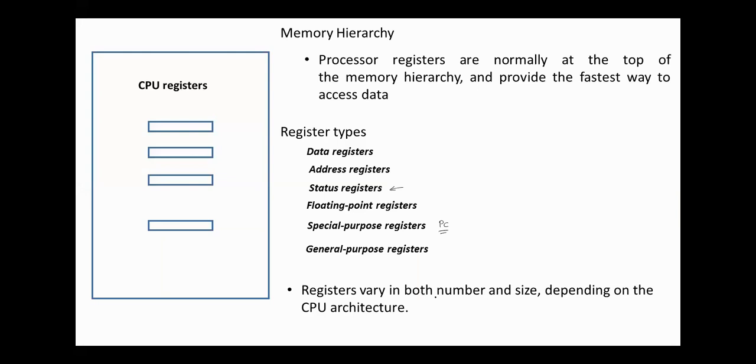CPU registers vary in both number and size depending on the CPU architecture. For many years 32-bit registers were used but now 64-bit registers are used. Regarding the number of registers, they vary from 16 registers to several hundred registers.